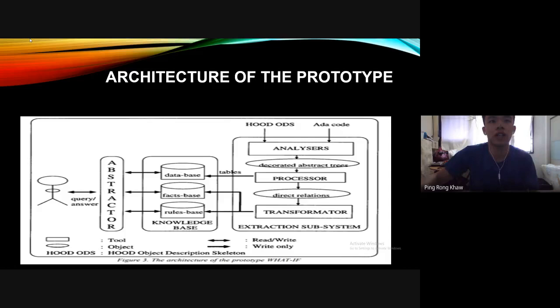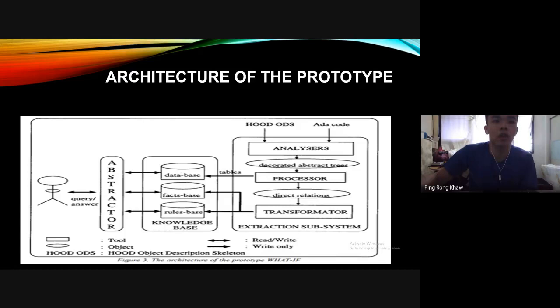This is the architecture of the prototype. In this prototype, there are three major systems: the attractions subsystems, the knowledge base, and the attractors. The attraction subsystem accepts as inputs the HOODS and the ADA code. HOODS stands for the HOO Object Description Skeleton. The output produced consists of direct relationships, which are later converted to co-lock facts and rules. The attractors receive queries, execute the abstraction process on the relations, and produce replies to the users.